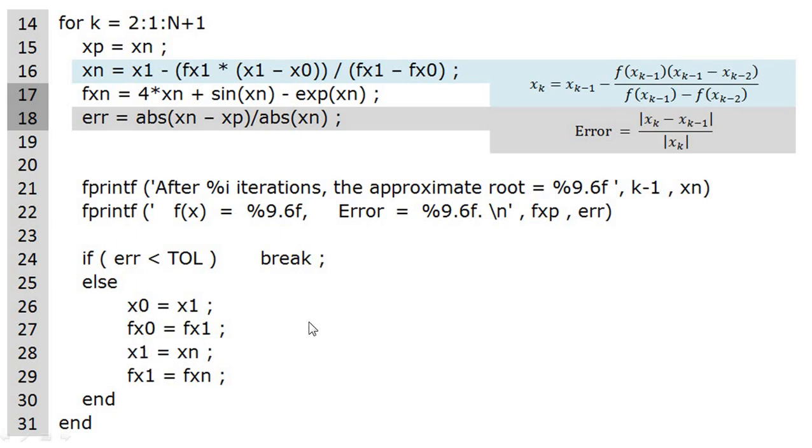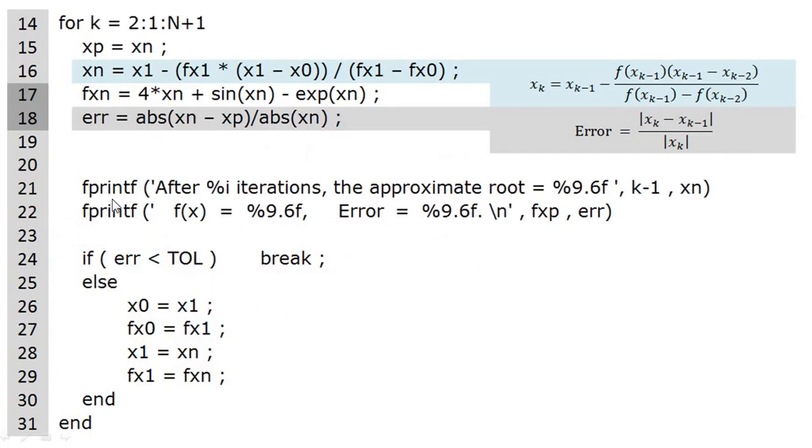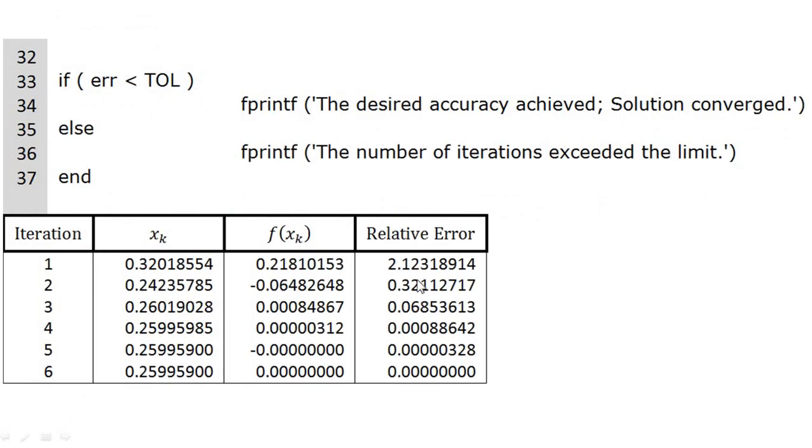After terminating the loop we have reached here. We will test if error is less than tolerance then we can print the desired accuracy achieved, solution has converged. Else the number of iterations exceeded the limit. Because of these two print statements we can get value something like these. So students develop this code and run this code and obtain the results.